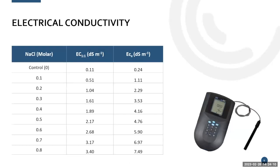Here are the eight sodium chloride treatments and control. On the 1:1 EC we had ECs up to about four, but converting to saturated paste with a factor of 2.2, we reached up to around 8 deci-siemens per meter in our soil — anything greater than four is generally considered saline. We went a lot higher than most normal salt tolerance experiments.